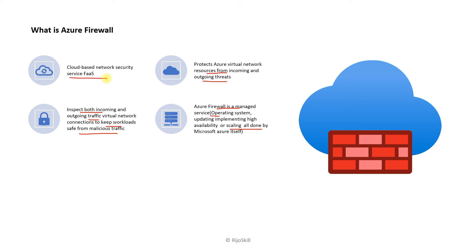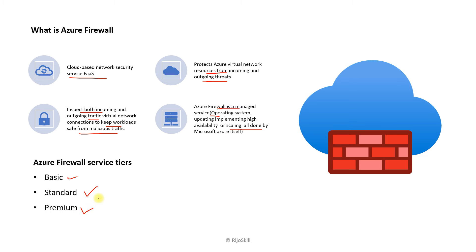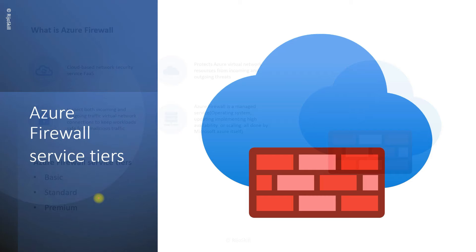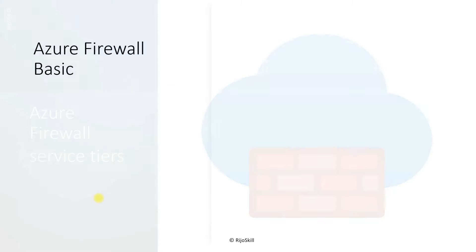Azure Firewall has three tiers, which are essentially Azure Firewall SKUs: Basic, Standard, and Premium. The first tier is the Basic tier.